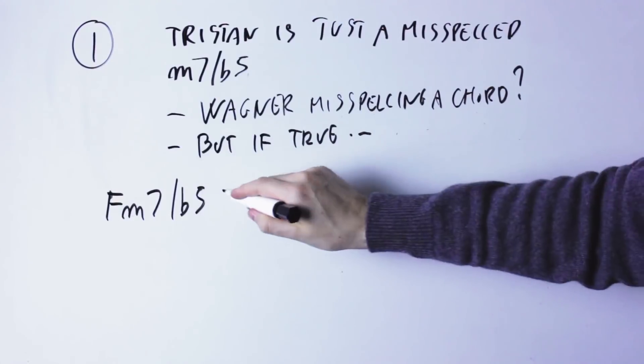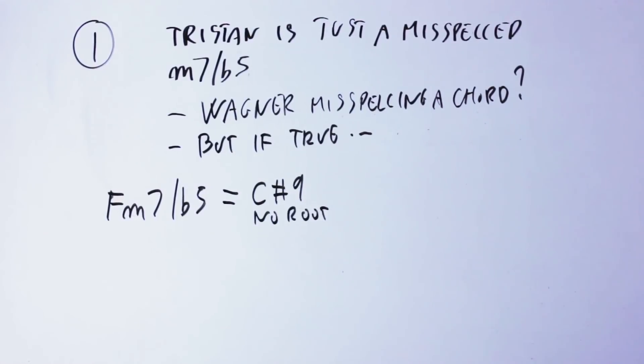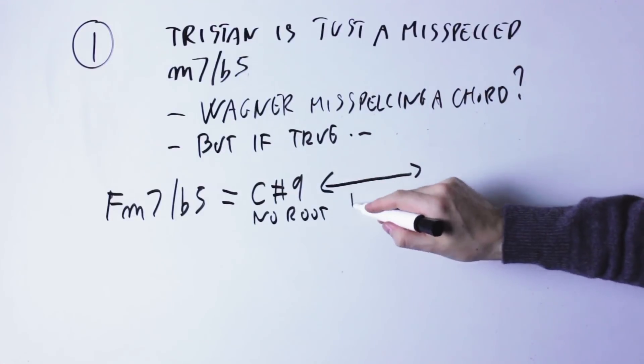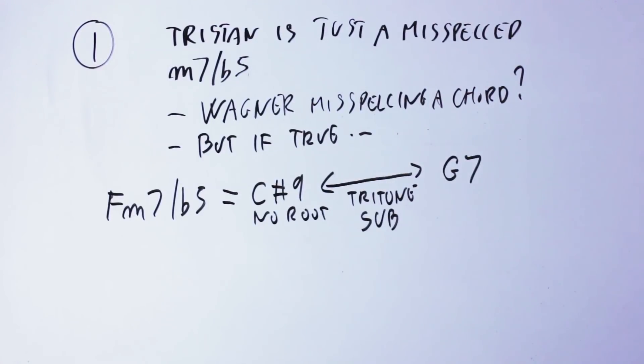...then this opens an interesting explanation, because you see, F minor 7 flat 5 is the same as a C sharp 9 chord with no root, and this C sharp 9 is a tritone substitution of the G seventh chord that is a chord in A minor.